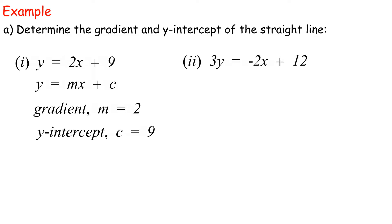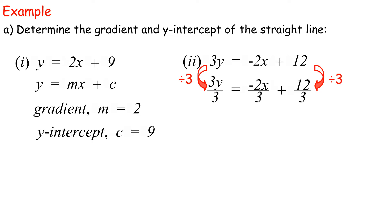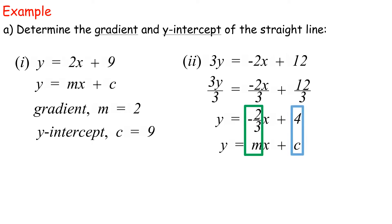2. 3y equals negative 2x plus 12. In order to compare with the formula y equals mx plus c, we need to divide both sides by 3. 3y over 3 equals negative 2x over 3 plus 12 over 3, giving y equals negative 2 over 3 x plus 4. Therefore, gradient m equals negative 2 over 3, and y-intercept c equals 4.